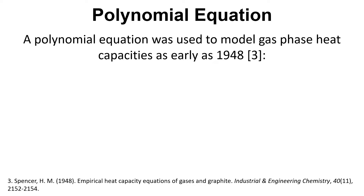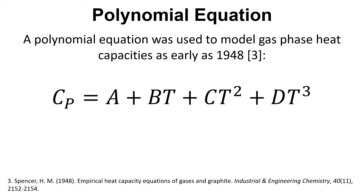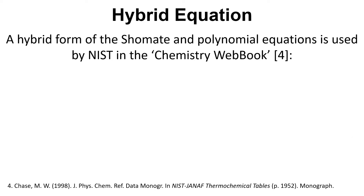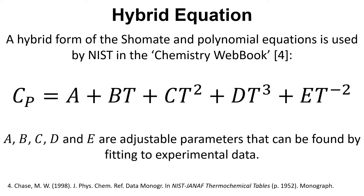There's also a polynomial form of the equation that can be used to model gas phase heat capacities. This is used by NIST in their chemistry web book. It is of the form Cp equals A plus BT plus CT squared plus DT cubed plus E times T to the minus 2. Again, these parameters are found by fitting to experimental data.